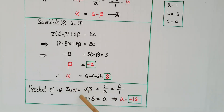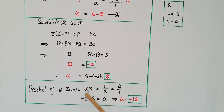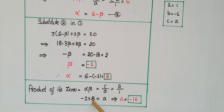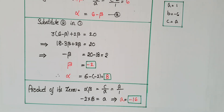Then the product of its zeros is equal to alpha times beta, which is equal to c by a. Here c is a and the denominator a value is 1, so alpha times beta equals a. Alpha value is 8 and beta value is minus 2, so 8 times minus 2 is equal to a, that is a is equal to minus 16.